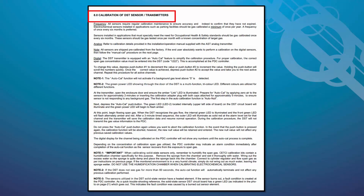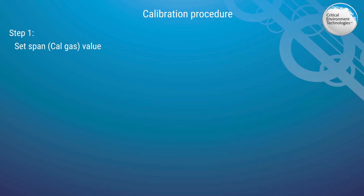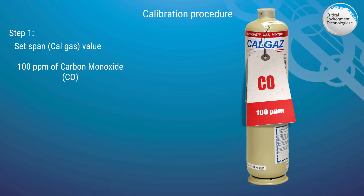To proceed with calibration, make sure the DST-ECOs are properly connected to the PDC and all devices are powered on and in normal operation. The first step in calibration is to set the Calgas value. The default value is 100 ppm. It is important that you check this value even if you think it is set to 100 ppm, just in case it was changed in the field. Also change the Calgas value if you are using a different concentration, as it must match the calibration gas you are using. In this tutorial, we are using 100 ppm CO.